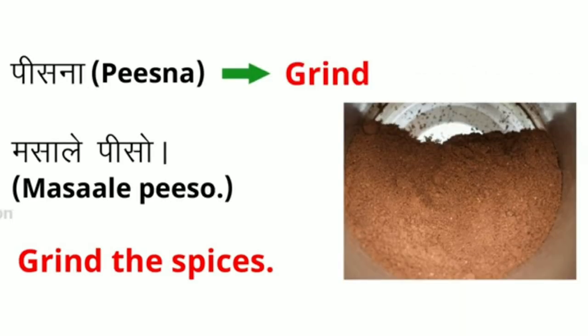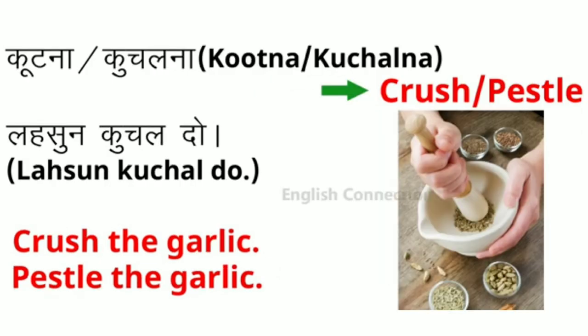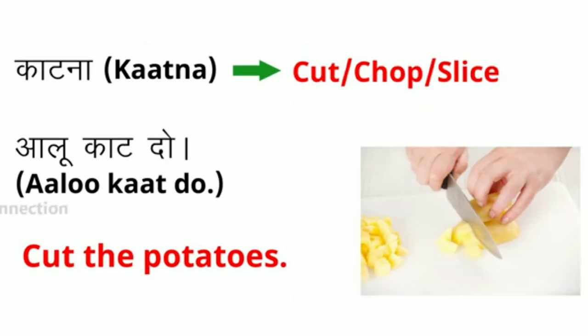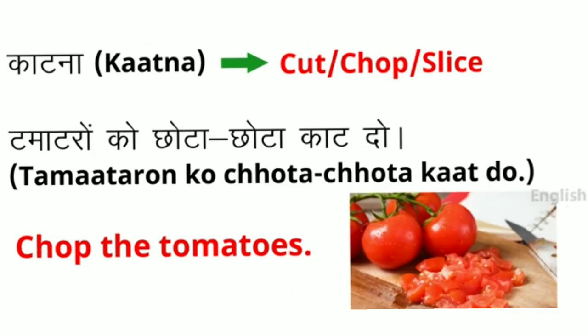The next word is 'grind.' Example: grind the spices. The next word is 'crush.' Example: crush the garlic, or pestle the garlic. The next word is 'peel.' Example: peel the potatoes.